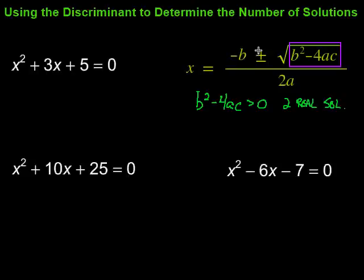So this number, plus or minus this number, is going to yield two different numbers. So that's why there's two real solutions if that number inside there is greater than zero.